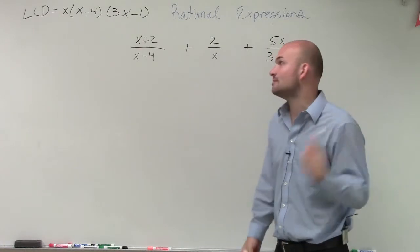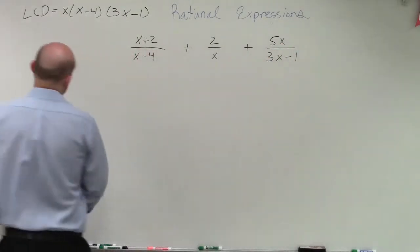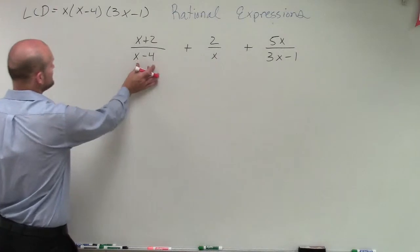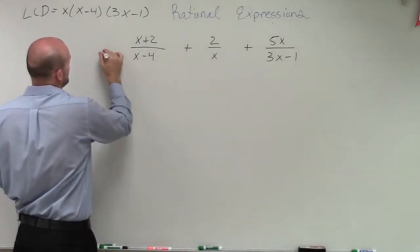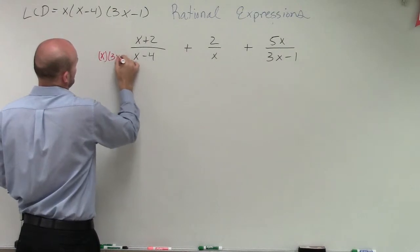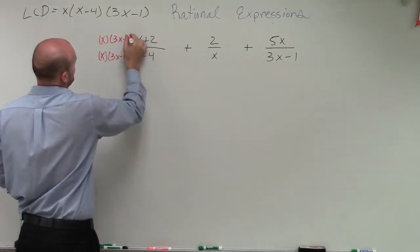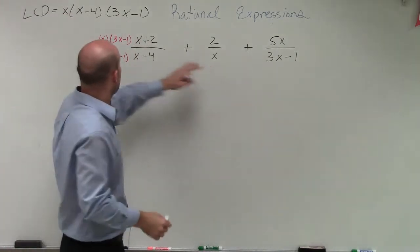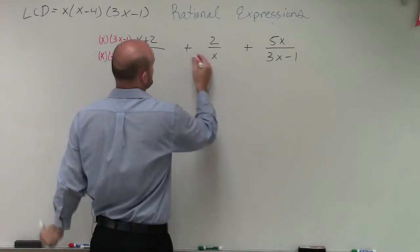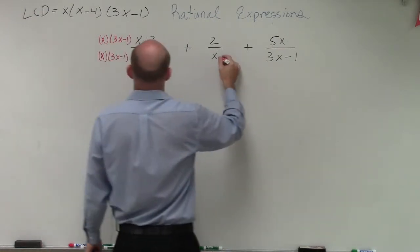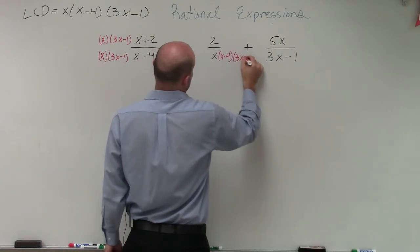Whatever I multiply the denominator by, I have to multiply the numerator by. Going left to right: here I have (x minus 4), but I need to include x and (3x minus 1), so I'm going to multiply my numerator and denominator by those values. Over here I already have x, but I need (x minus 4) and (3x minus 1), so I'll multiply by (x minus 4) and (3x minus 1).